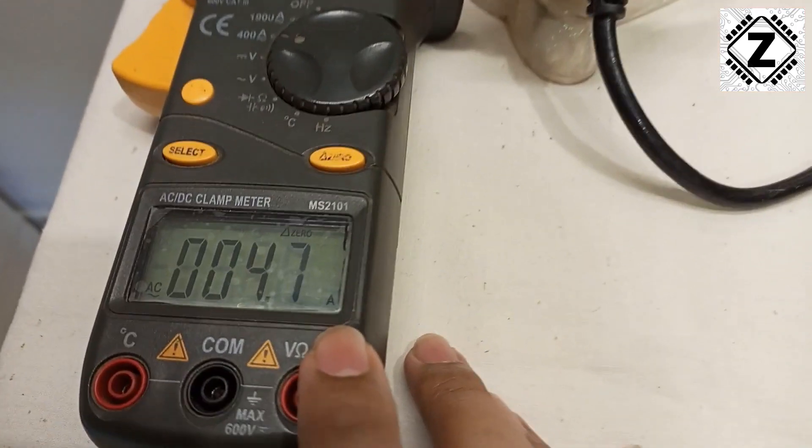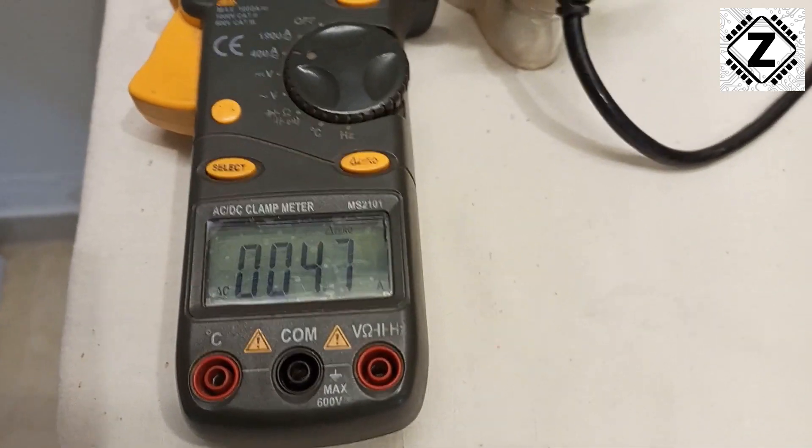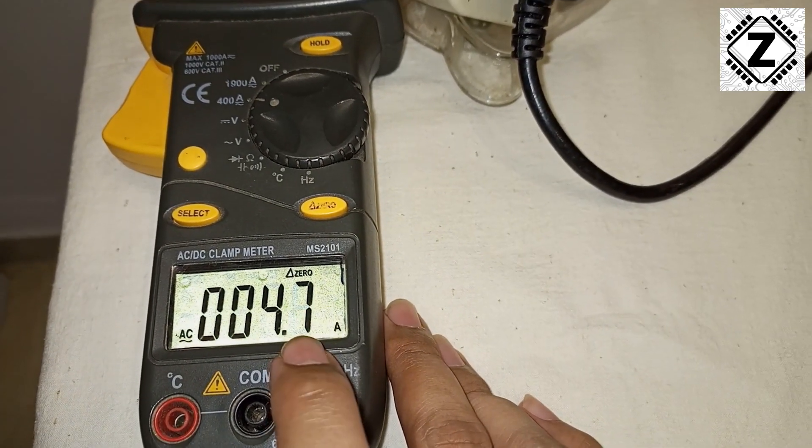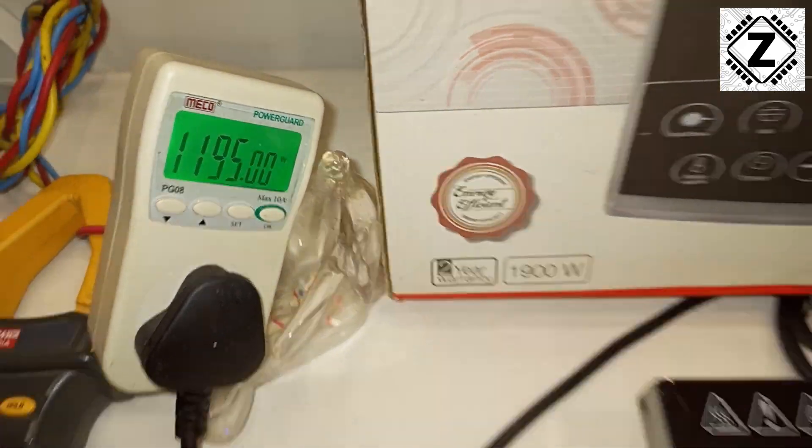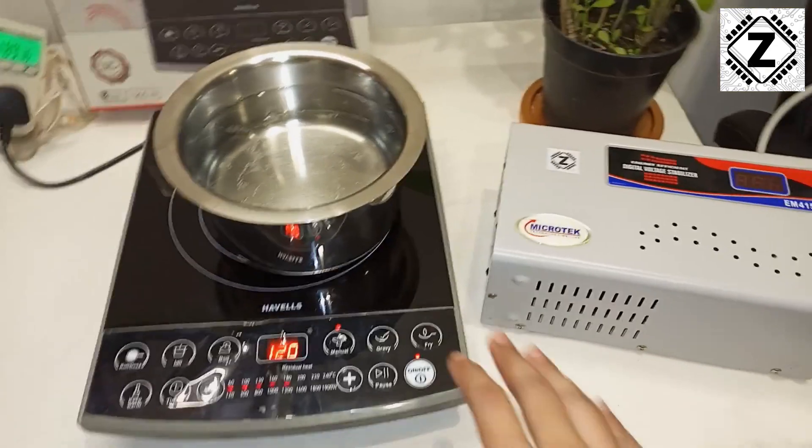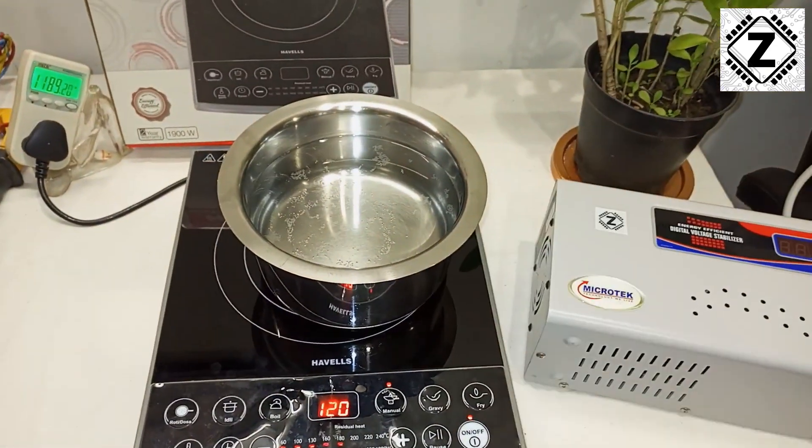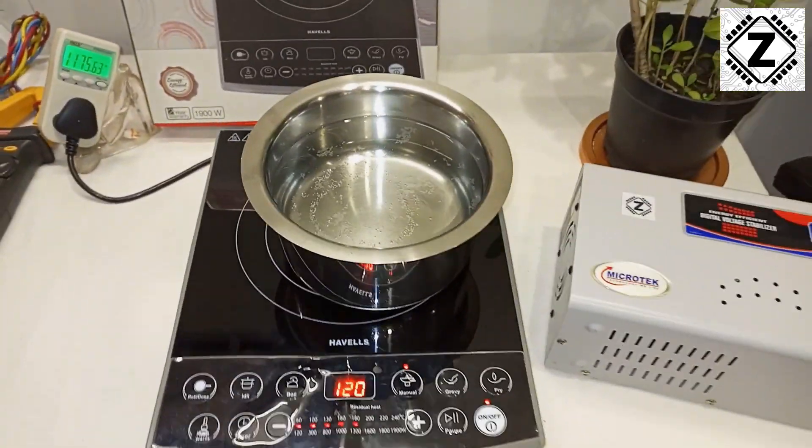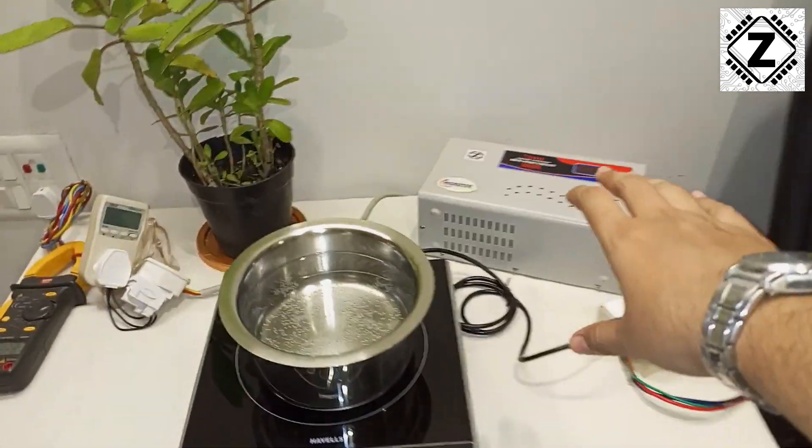The power consumption we see is roughly somewhere around 1200 watts. Let's check the amperage - 4.7 amps. Let me turn on the flash so you can see better. 4.6, 4.7 amps it is, and the wattage draw is 1195. I'll just call it 1200 for the sake of remembering. Now we have to put this thing in between, and then we can find out the efficiency of this stabilizer. I have connected the stabilizer in between.